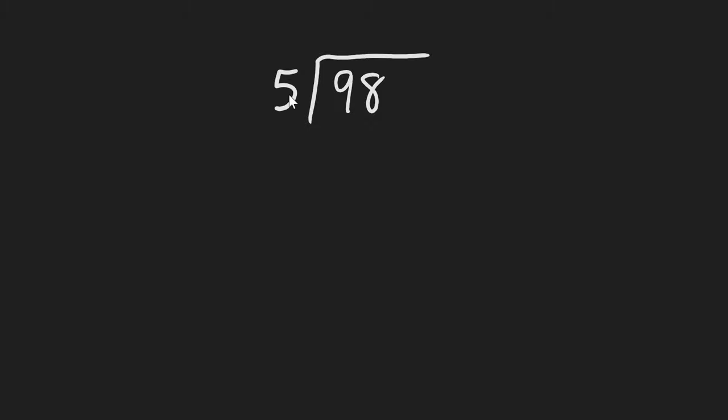To calculate 98 divided by 5, we first begin in the tens place with 9 divided by 5. So how many times does 5 go into 9?